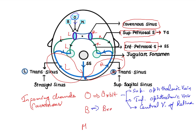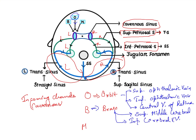B means brain — some veins will be coming from the brain. These include the superficial middle cerebral vein and the inferior cerebral vein, which drain into the cavernous sinus.